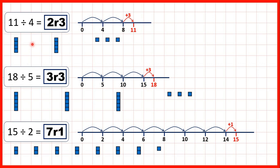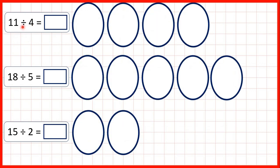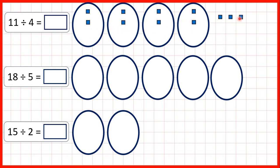We can also show remainders using a sharing model of division. Remember, division can be two different things — it can be making groups, like we've done here, but it can also be sharing. So for 11 divided by 4, we can share out 11 counters between 4 groups. But with division we need our groups to be equal, so these 3 counters can't be shared out. That means we have 2 counters in each group and then 3 that can't be shared out, so our answer is 2 remainder 3.